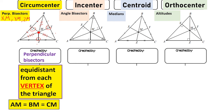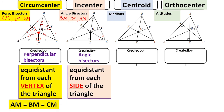Next we have the incenter, created by angle bisectors. The angle bisectors here are BM, CM, and AM. We know they are angle bisectors because each angle at a vertex is cut into two congruent parts, shown by the congruence marks. The incenter M is equidistant from each side of the triangle, so XM is congruent to YM and also equal to ZM. For example, if XM is 5, then MY is 5 and MZ is also 5.